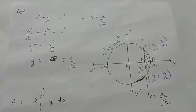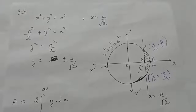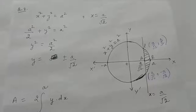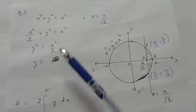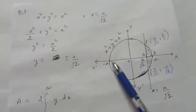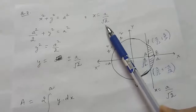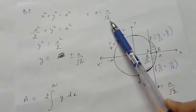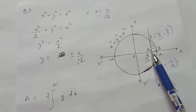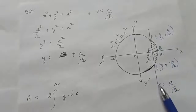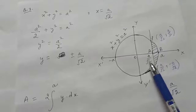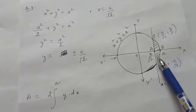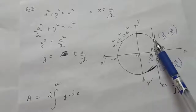Question 7: find the area of the smaller part of the circle x² + y² = a² cut off by the line x = a/√2. Draw the circle and the line x = a/√2. Since a/√2 is less than a, the line is inside the circle. Draw the line and identify the smaller part — that is the region we have to find.